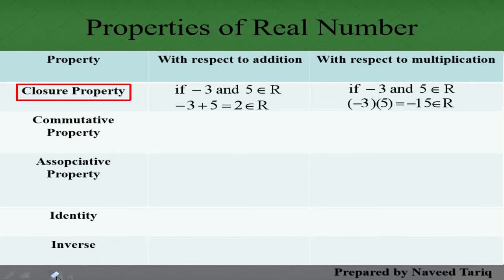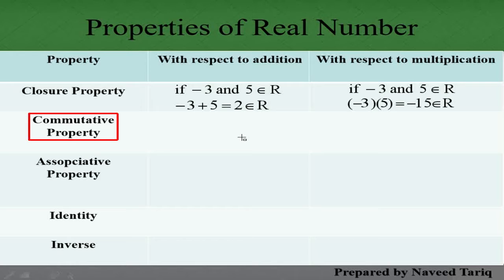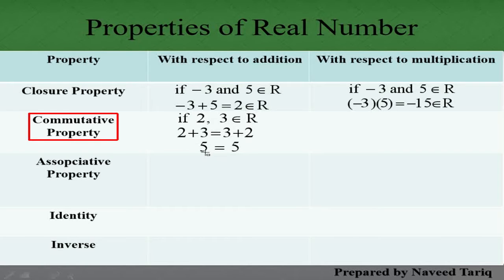آگے Commutative Property کی بات کریں گے۔ Commutative Property میں ہمارے پاس دو numbers ہیں جیسے 2 اور 3۔ ہم انہیں add کریں: 2 plus 3 equals 3 plus 2 — یعنی place change ہو رہی ہے لیکن answer same آتا ہے۔ 2 plus 3 بھی 5 ہوتا ہے اور 3 plus 2 بھی 5 ہوتا ہے۔ تو یہ real numbers کی Commutative Property ہے۔